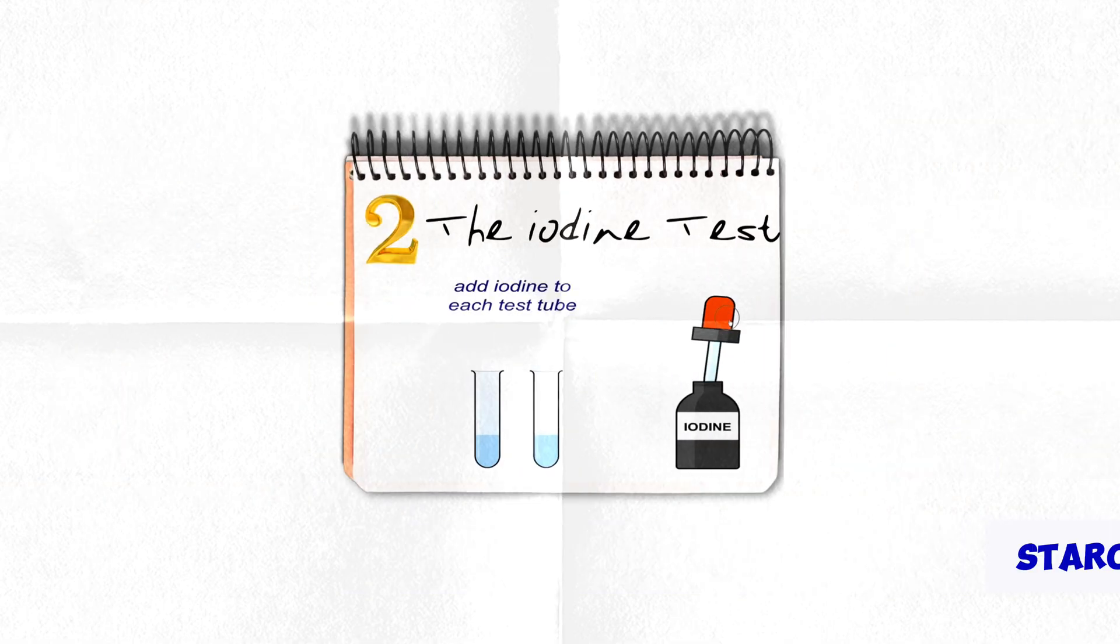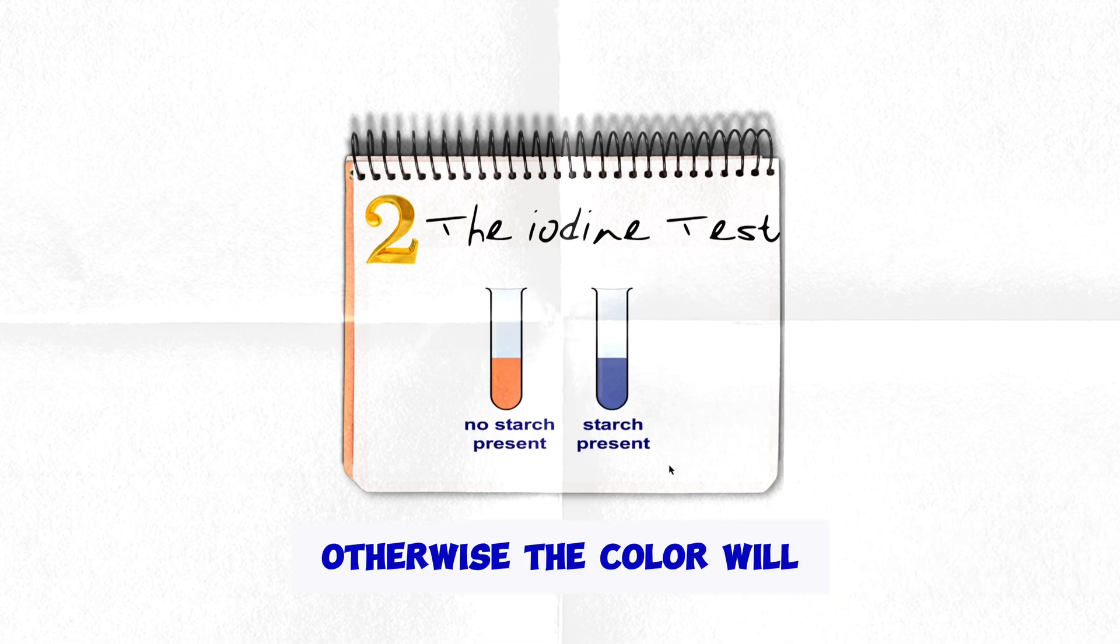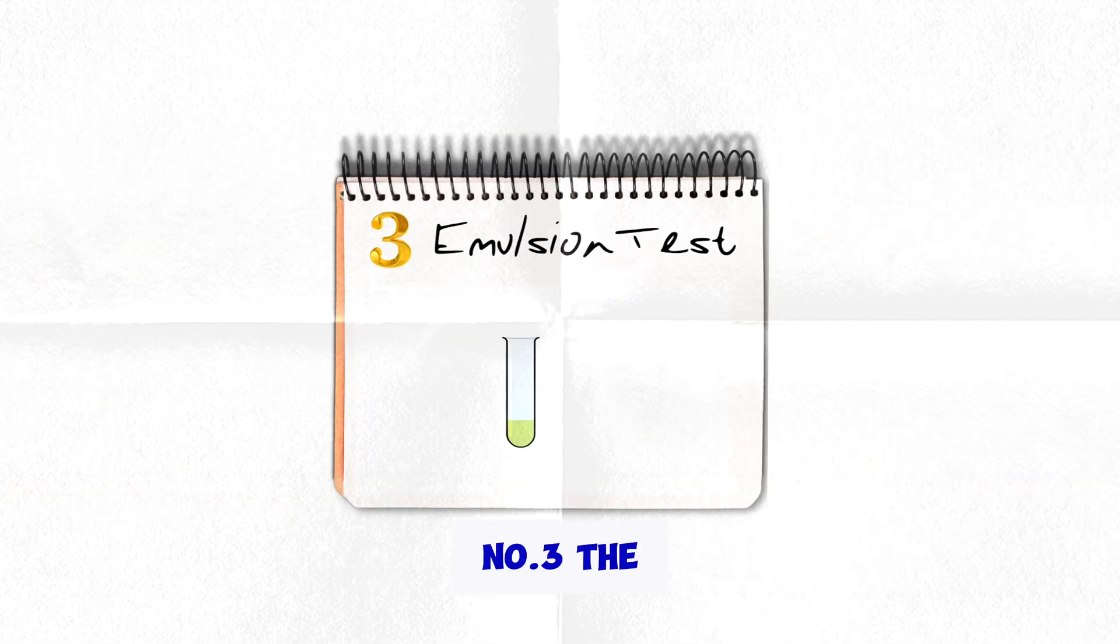Number 2. The test for starch. Add iodine to the sample. If starch is present, the colour will change to blue-black, otherwise the colour will stay brown. Number 3.